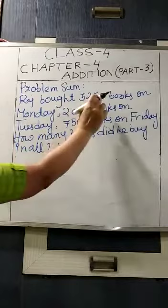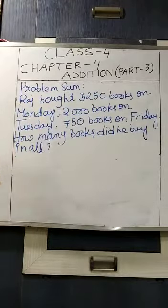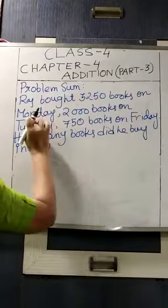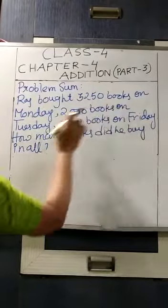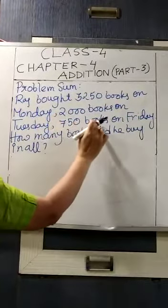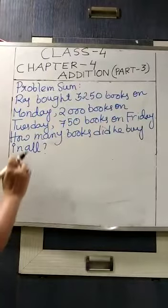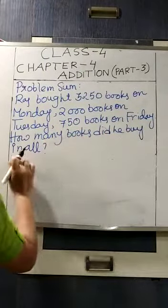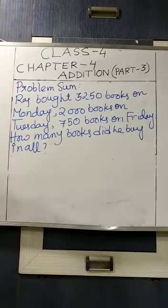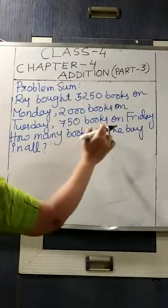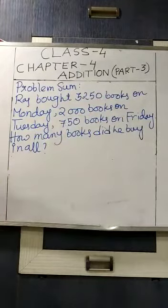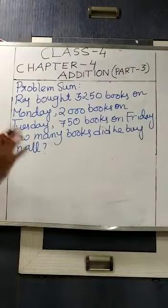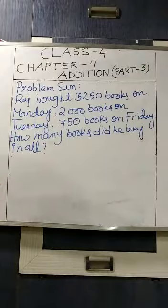Here you see that I have written a problem sum. Raj bought 3250 books on Monday, 2000 books on Tuesday, 750 books on Friday. How many books did he buy in all? In all means total. So in 3 days, total how many books he bought? Whenever we have to find out the total number of things, that time we do the addition.